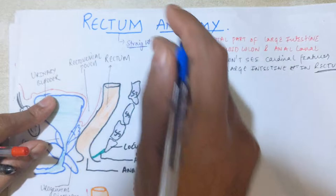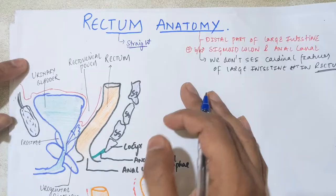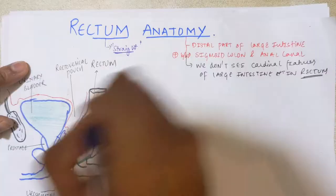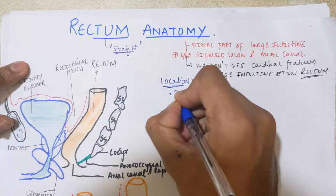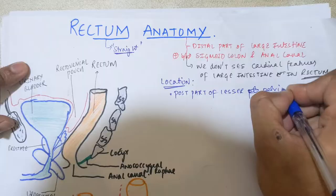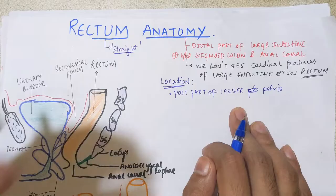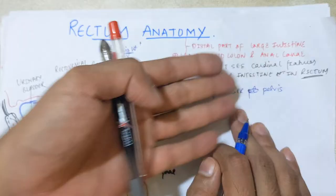From Latin, the meaning of 'rectum' is actually 'straight,' but it is not straight in humans. In quadruped species the rectum is straight, but in humans it is not straight. That is just extra information. Now, regarding the location: the rectum is present on the posterior part of the lesser pelvis. In males, it is present on the posterior side of the urinary bladder.